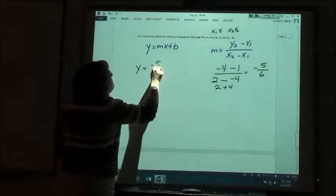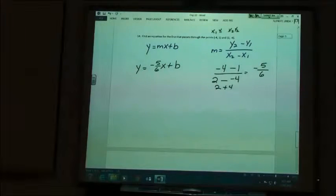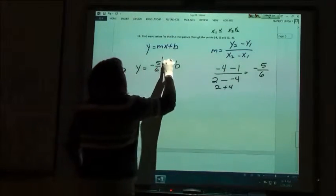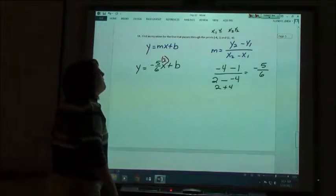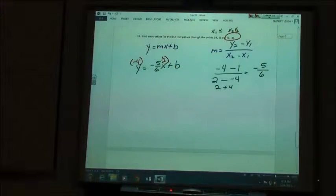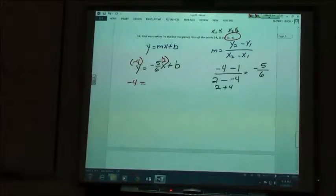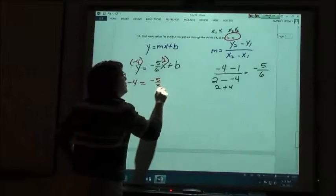So, we know that y equals negative 5 sixths x plus some number b. Now, we can use either of those two points, point 1 or point 2, in for x and y. It doesn't matter which one you pick. What do you want to put in for x? Let's put in 2. You're going to do the 2, okay? If you use the 2 for x, what are you going to put in for y? Negative 4. So, you said, I'm going to use this point, and I'm going to put those in for my x and my y. So, now I need to solve that. So, negative 4 is going to equal, you have to do negative 5 sixths times 2. Negative 5 thirds plus some number b, then.